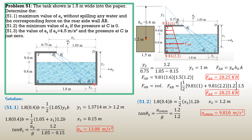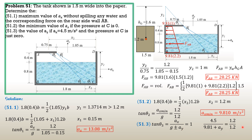Finally, for part 3: find ay if ax = 4.5 m/s² and the pressure at C is just zero. The figure is the same as in part 2, so theta 3 equals theta 2 and tangent theta 3 = 1. The formula is ax / (g ± ay) = 1, so 4.5 / (9.81 + ay) = 1. Solving: 9.81 + ay = 4.5, giving ay = negative 5.31 m/s². The negative sign means ay is directed downward.